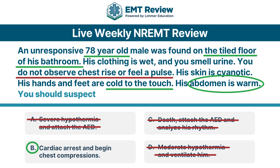Rigor mortis might also factor in. This 70-year-old's hands and feet might always be cold. So what do we do? With a warm core on a cold ground, we say this is cardiac arrest — begin chest compressions. It's not death. It's not severe hypothermia because his core is warm. Moderate hypothermia, maybe, but ventilating him isn't the answer either. The correct choice is B.